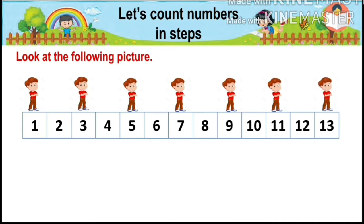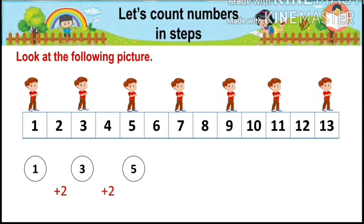Then he goes to the next number, nine, skipping eight. Then he goes to number eleven, skipping ten. Then he goes to number thirteen, skipping twelve. If you observe carefully, you will find that this man goes two steps forward each time. It means he was at number one, then he goes two steps forward — plus two. Then the next number is three. Again two steps forward, we get five. Again two steps forward, we get seven.